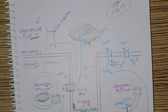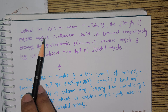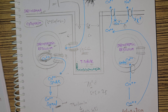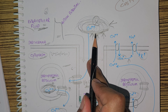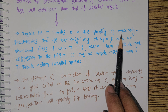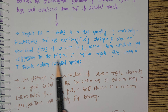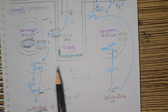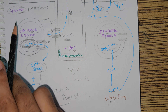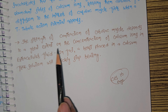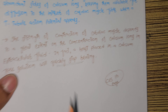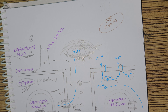From the textbook: without calcium from the T-tubules, the strength of cardiac muscle contraction would be reduced considerably, because the sarcoplasmic reticulum of a cardiac muscle cell is less well developed than that of skeletal muscles. So contraction mainly depends on calcium from the extracellular fluid. Inside the T-tubules is a large quantity of mucopolysaccharides that are electronegatively charged, keeping abundant stores of calcium ions available for diffusion into the cardiac muscle fiber when a T-tubule action potential appears. A heart placed in a calcium-free solution will quickly stop beating.